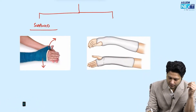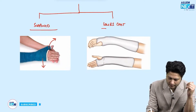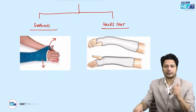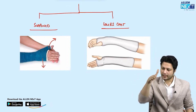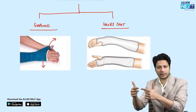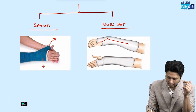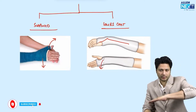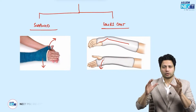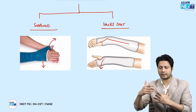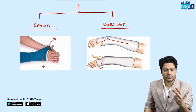The Colles cast is identified by the wrist being kept in palmar flexion, ulnar deviation, and pronation — like a handshaking position. That is why it is called the handshaking cast. So for the upper limb, the two important casts are the scaphoid cast and the Colles cast.